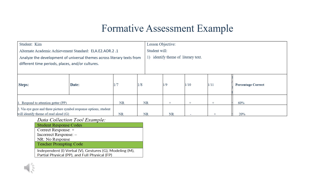This example is for a high school alternate academic achievement standard for ELA: to analyze the development of universal themes across literary texts from different time periods, places, and cultures. The lesson objective is to identify the theme of the literary text. This is a week-long example of how to collect that data.